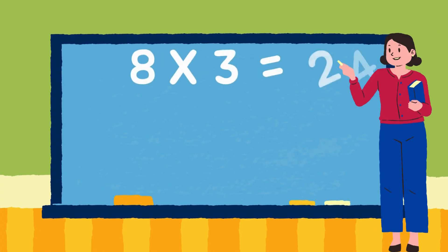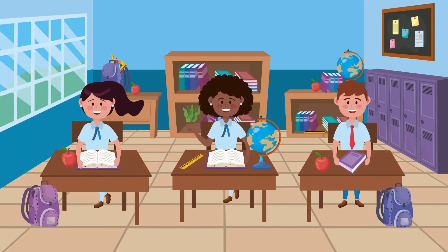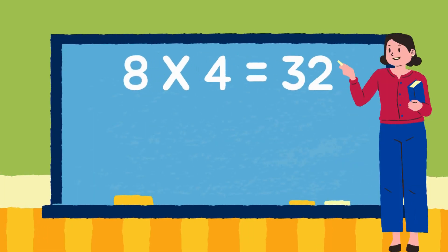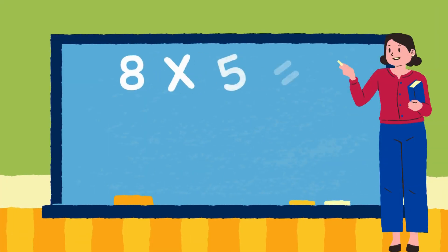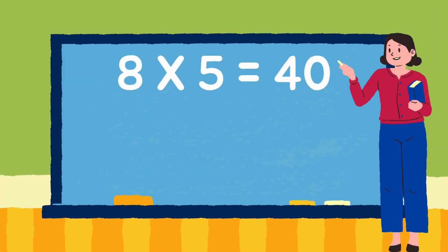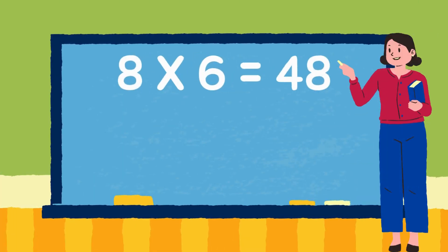8 threes are 24. 8 fours are 32. 8 fives are 40. 8 sixes are 48.